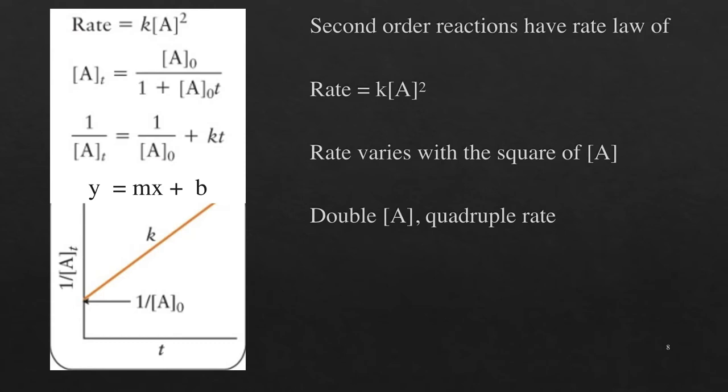If doubling the concentration of a reactant increases the rate by fourfold, the reaction is a second order reaction. The rate equals the rate constant times the reactant concentration squared. Integration with respect to time reveals that the plot of the inverse of the reactant concentration versus time gives a straight line. The slope of that line is equal to the rate constant.